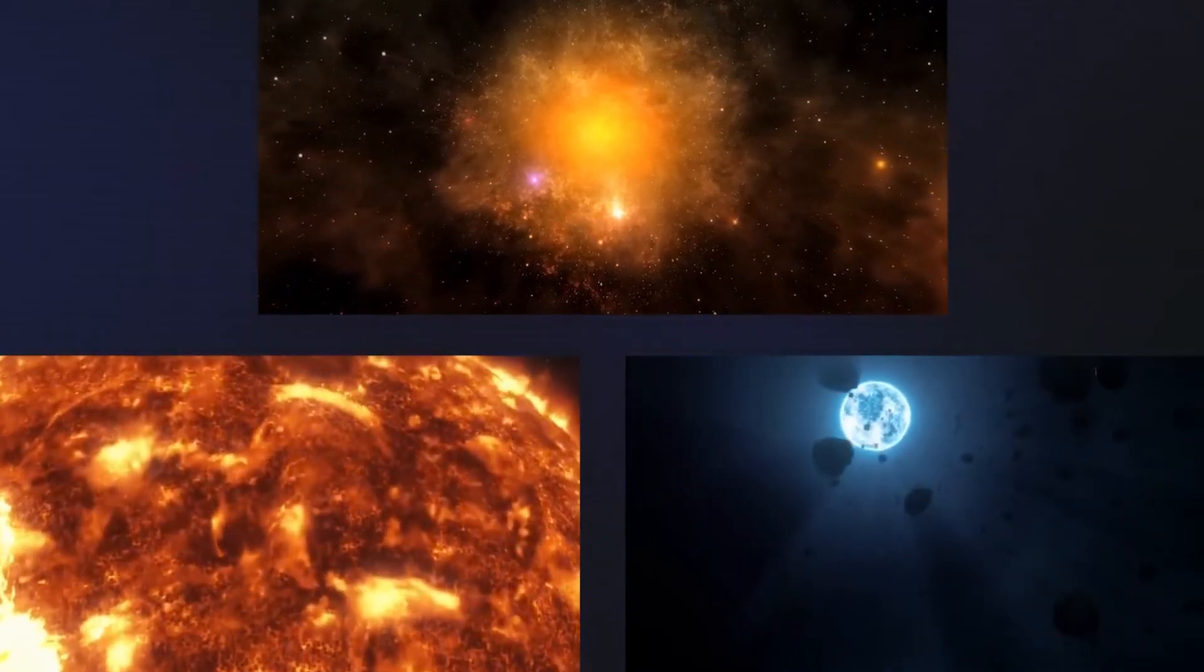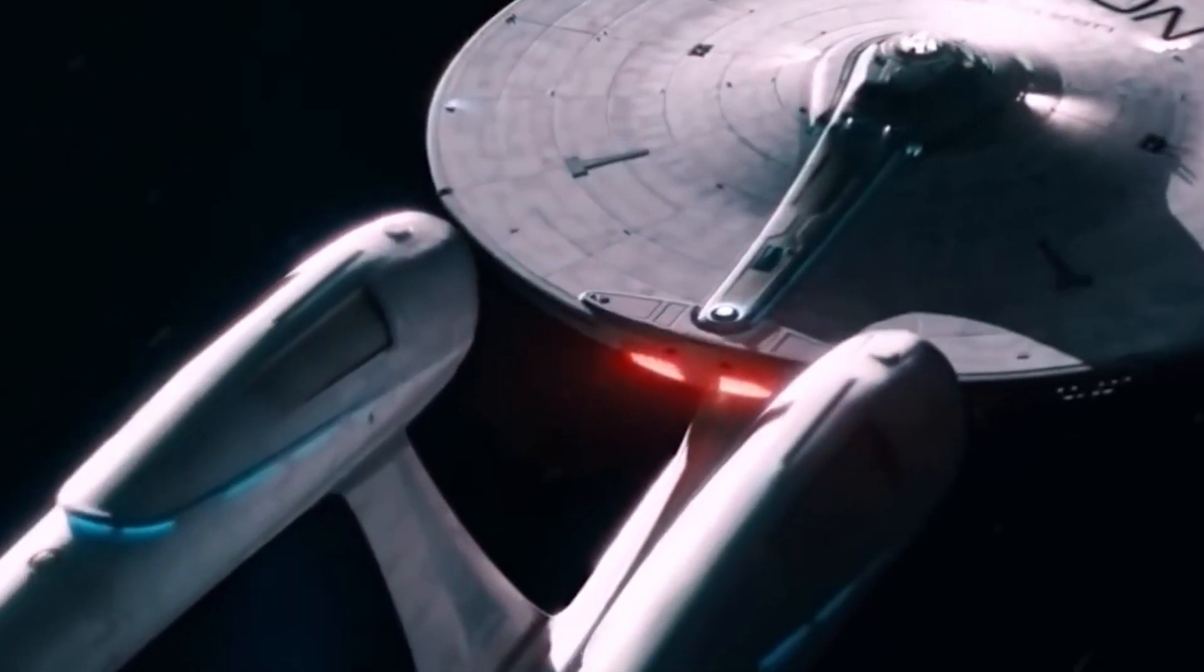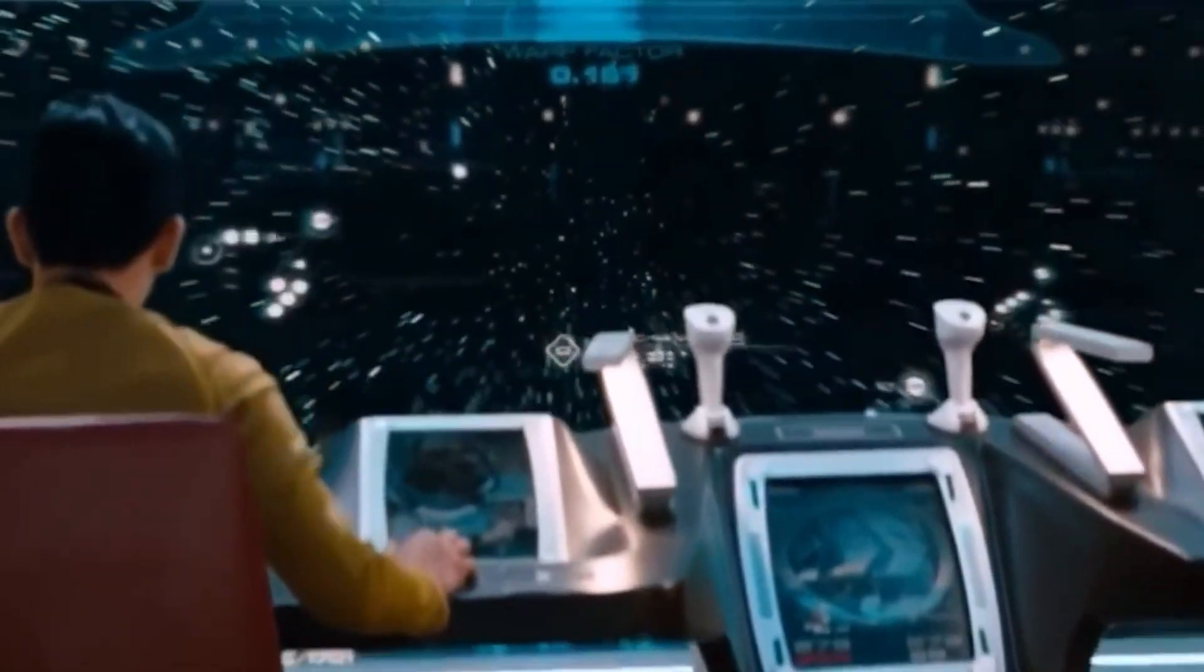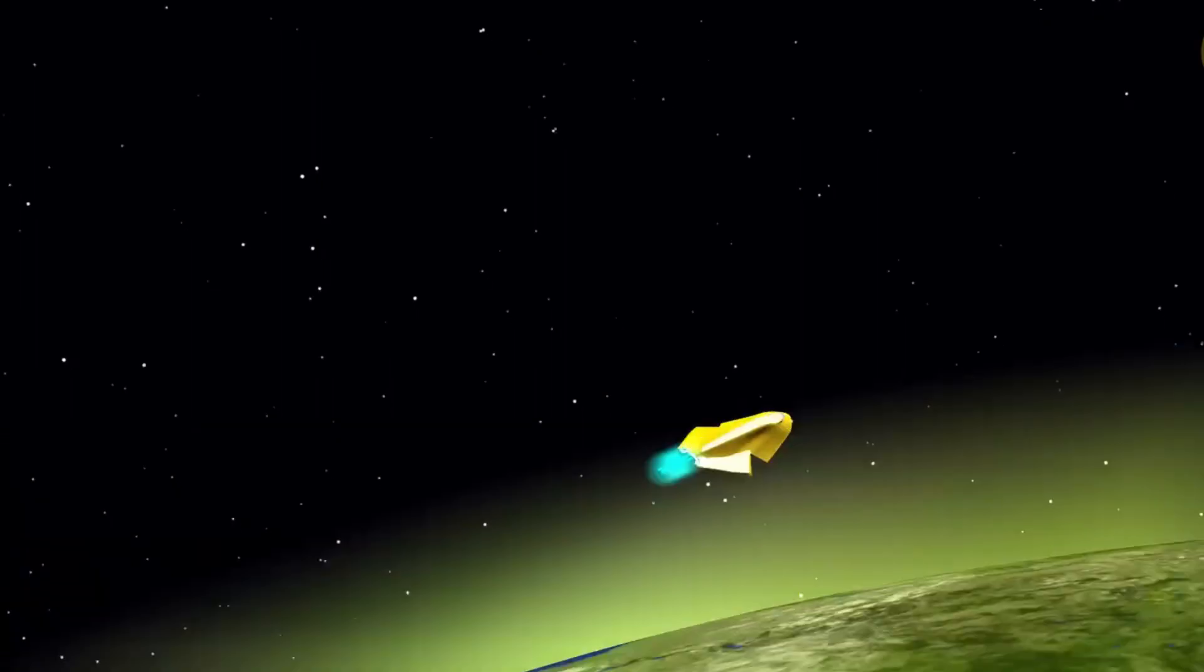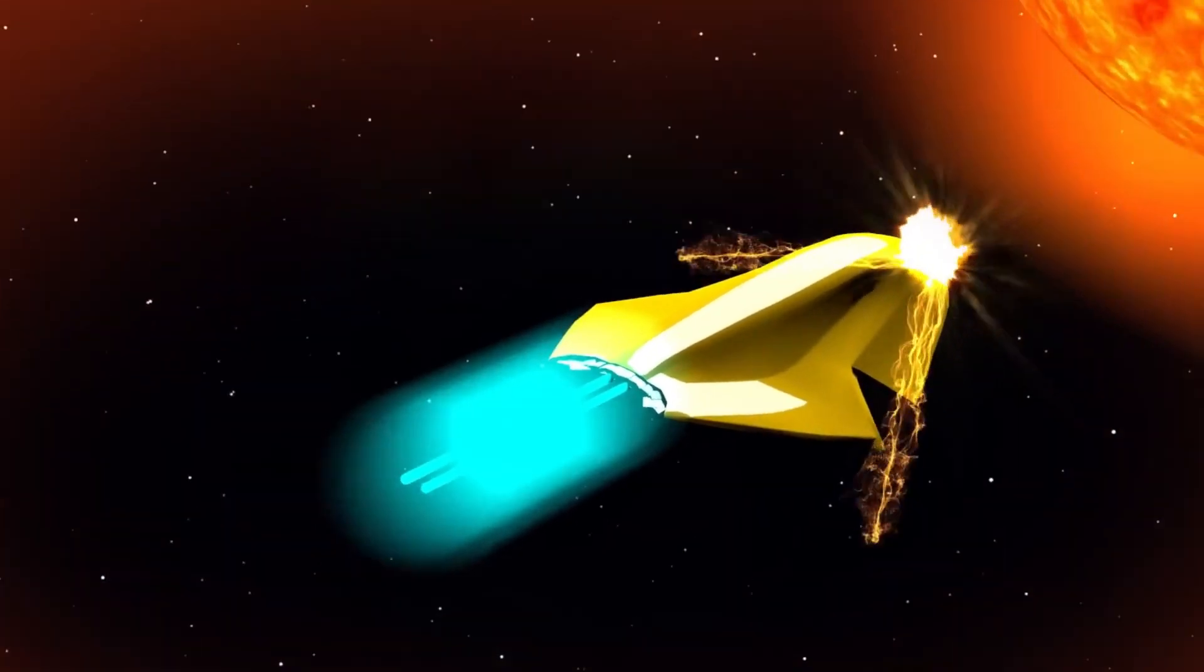Even when approaching the speed of light, there is nonetheless a risk associated with very high speeds, a collision. At high velocity, a mere speck of dust would cause colossal damage if it hit us. Fortunately, our ship is equipped with a force field that repels dangerous objects and allows us to roam freely through space.